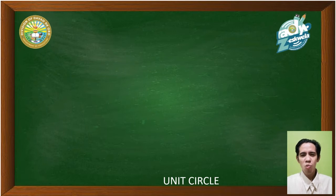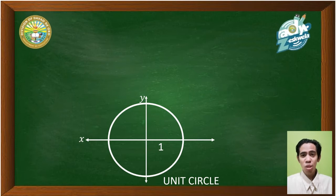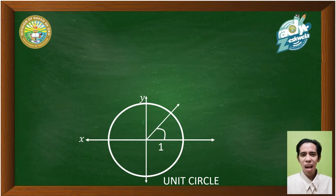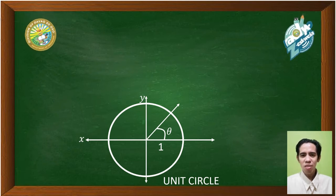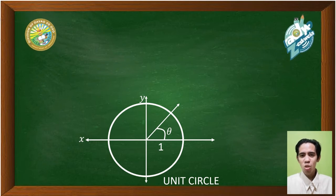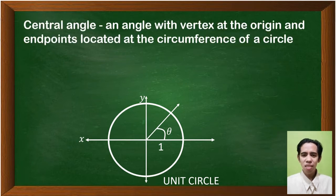We have a unit circle with radius of one. We created an angle from the standard position moving counterclockwise, and we named this angle theta. Since the center of the circle is at the origin of the Cartesian plane, the angle we created is called a central angle. The central angle is an angle with vertex at the origin and endpoints located at the circumference of a circle.